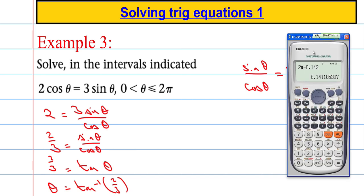Get the calculator out again. Make sure it's in radian measure. We're good to go here. We're going to hit inverse tan of 2 over 3, close those brackets, hit the equals: 0.588.